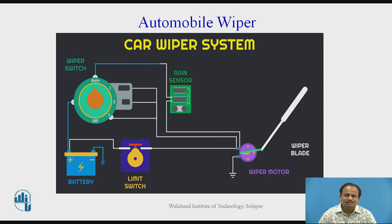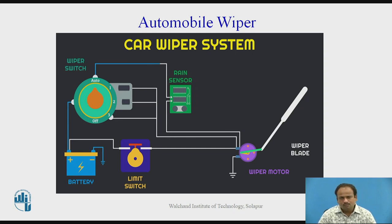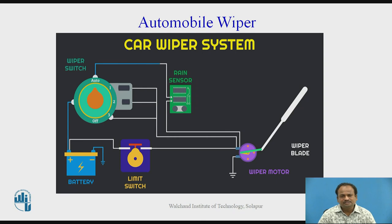A rain sensor unit is also present. In this particular rain sensor unit, whenever rain starts falling on the vehicle, it senses the rain and automatically the wiper starts oscillating and cleans the glass of the vehicle.